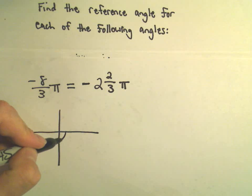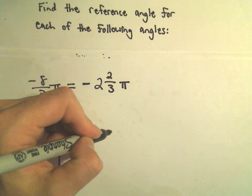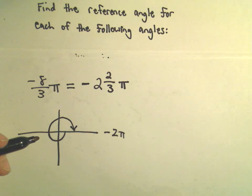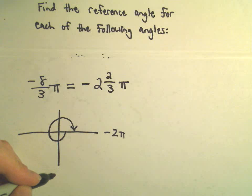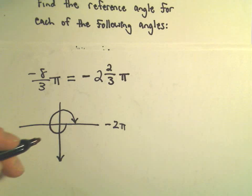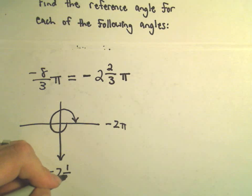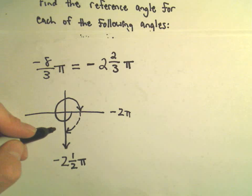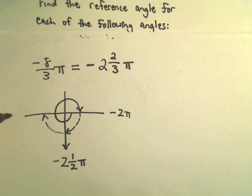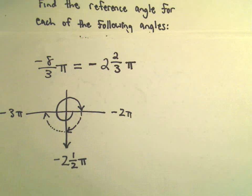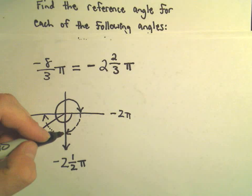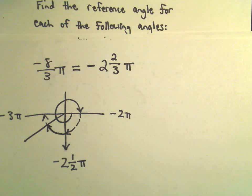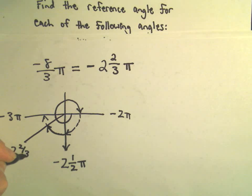If we go negative 2π, that would take us clockwise, so that would be the angle negative 2π radians. And then we have to go another 2 thirds. If we made it to the bottom of the y axis, we would have gone another half π, so that would be negative 2 and 1 half π. That would now put us at our negative y axis. If we were to go all the way to the x axis, that would be negative 3π. Negative 2 and 2 thirds would have to be somewhere in between there. This will be the angle negative 2 and 2 thirds π.